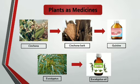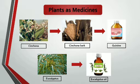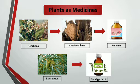Plants can also be used as medicines. For example, cinchona bark is used to produce quinine medicine, which is heavily used for the treatment of malaria. From the eucalyptus tree we get eucalyptus oil, which is used for the treatment of cold.